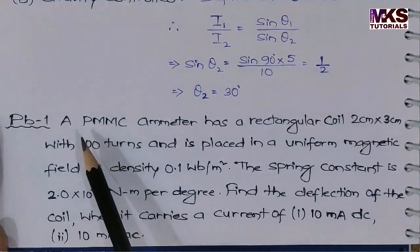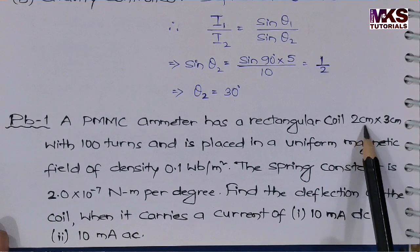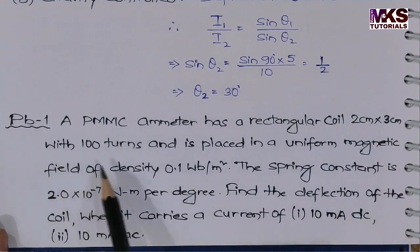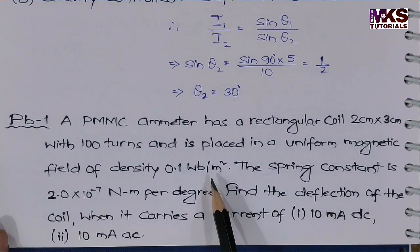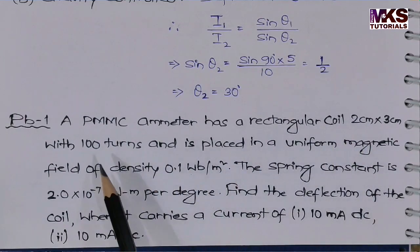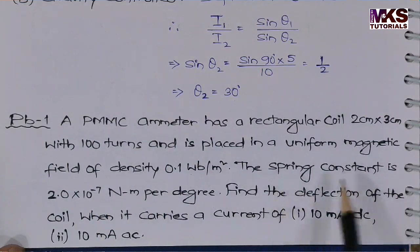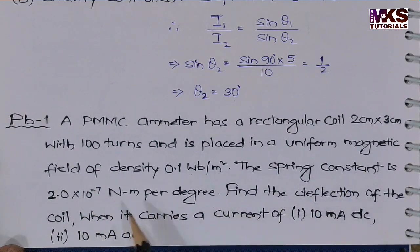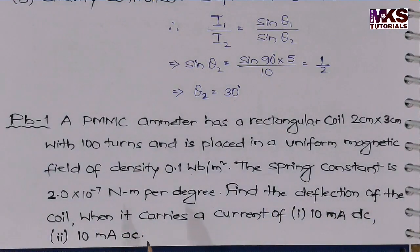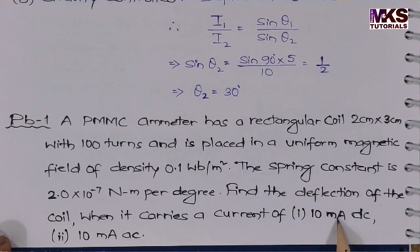Now the second question: A PMMC meter has a rectangular coil of 2 cm × 3 cm, meaning its area is given, with 100 turns, placed in a uniform magnetic field of density 0.1 Weber per meter square. The spring constant is 2 × 10⁻⁷ Newton meter per degree. Find the deflection of the coil when it carries a current of 10 milliampere DC and 10 milliampere AC.